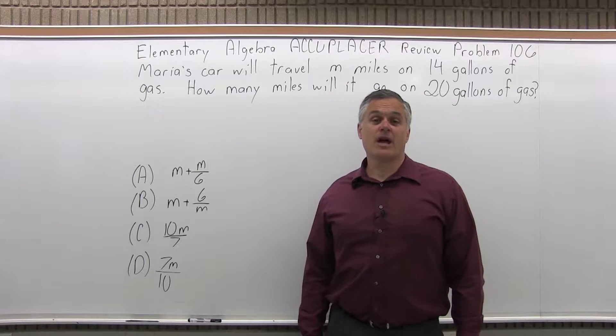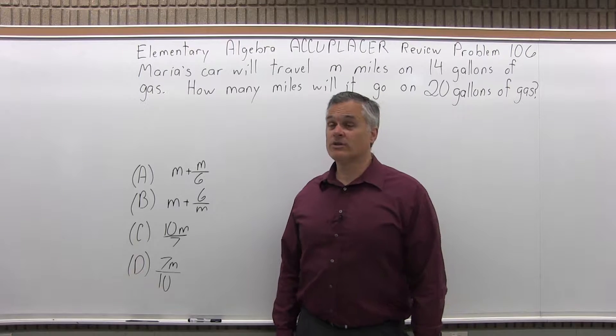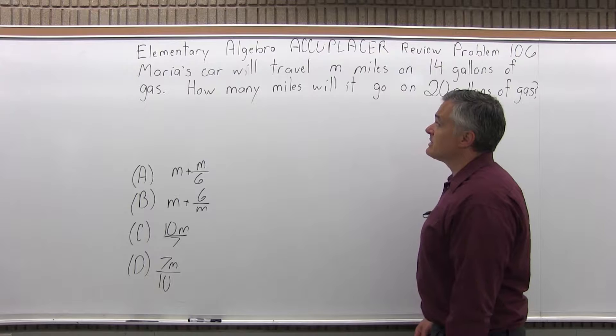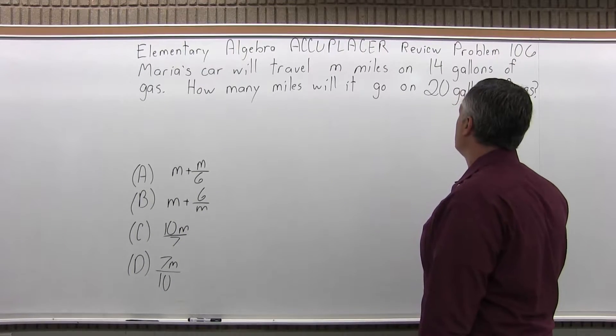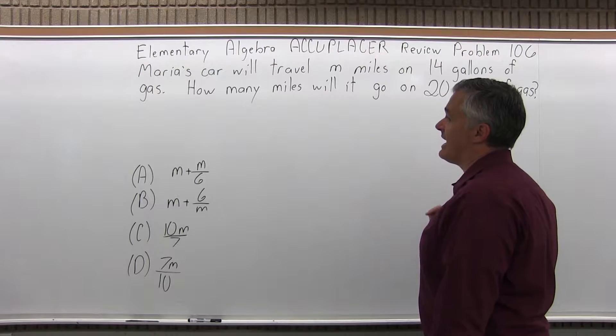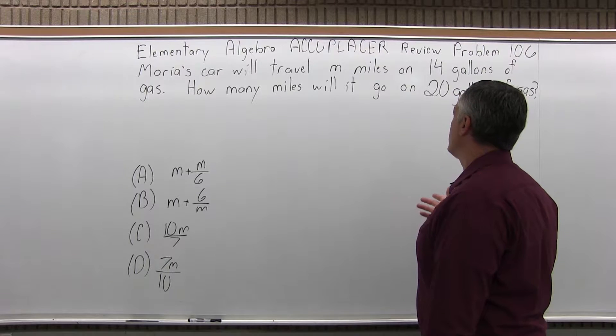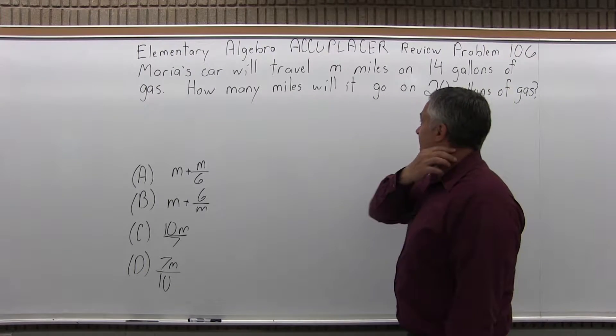This is the Elementary Algebra Accuplacer Review, Problem 106. It says Maria's car will travel M miles on 14 gallons of gas. How many miles will it go on 20 gallons of gas?